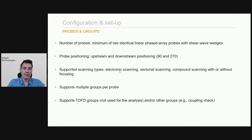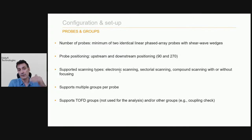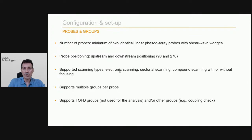We need two identical linear phased array probes on each side, positioned upstream and downstream at 90 and 270 degrees with respect to the axis of the weld. The feature supports linear scanning, sectoral scanning, and compound scanning, with or without focusing. You can have multiple groups per probe — sectoral scan and linear scan with the same probe. You can also use TOFD and any other groups such as coupling check; they are not used by the assisted analysis but don't interfere with it either.